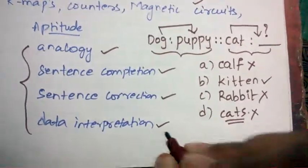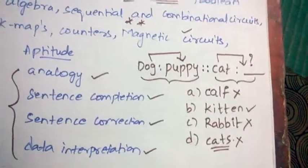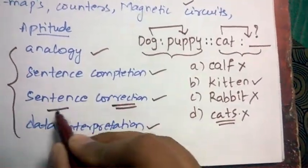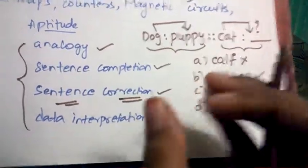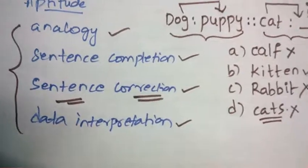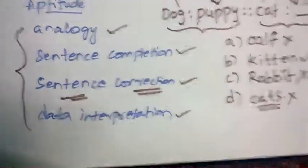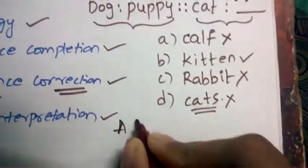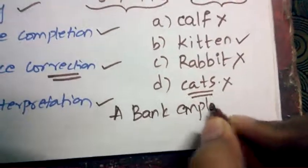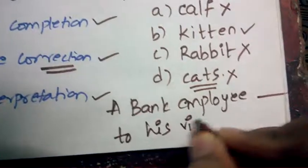Coming to electrical engineering GATE, and most importantly you need to concentrate on sentence correction because there will be very easy ways to solve, whereas the answers which they give in the options will also be very confusing. I'll give you an example.